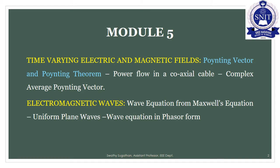Today we are going to study Module 5 of Electromagnetics. This module has two parts: the first part is time varying electric and magnetic fields, and the second part is electromagnetic fields. Today we are going to study the first part — time varying electric and magnetic fields.